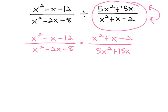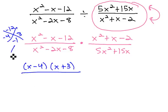In order to simplify, everything must be factored. In the numerator of the first one, we're multiplying to negative 12, adding to negative 1. That's negative 4 and 3, giving us x minus 4, times x plus 3. In the denominator, we're multiplying to negative 8, adding to negative 2. That's negative 4 and positive 2, so we have x minus 4, times x plus 2.